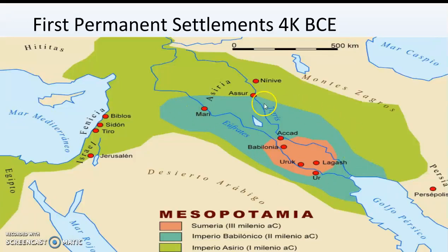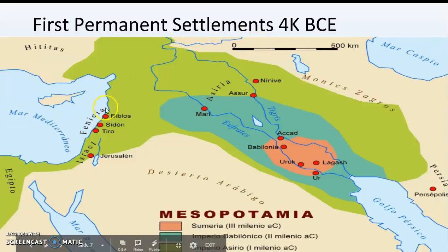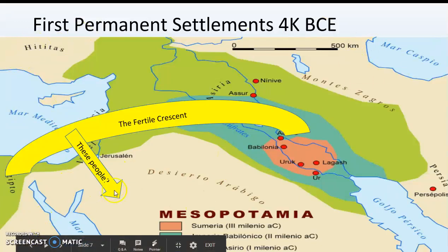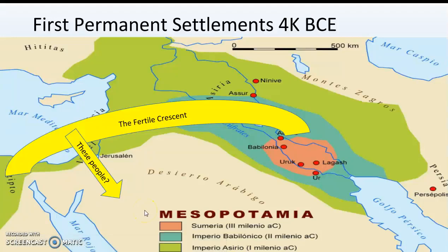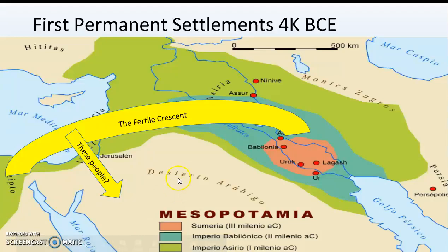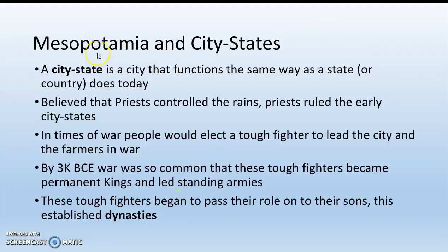Mesopotamia gets bigger by the second millennium — we can see the light blue and green area, which is actually the Assyrian Empire. This area is called the Fertile Crescent because it's fertile and easy to grow crops, and it's kind of crescent shaped. Now there are still people living here who aren't farming — still hunting and gathering. Not everybody just stops hunting and gathering; some people start farming, but most are still hunter-gatherers. Those people are called nomads — that is a vocabulary term. Mesopotamia is not a country but a region where people live and grow crops.